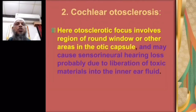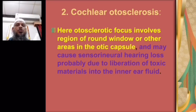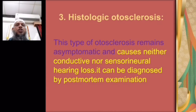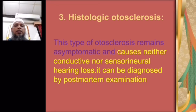Number two is cochlear otosclerosis, where the otosclerotic focus involves the region of the oval or round window or other areas in the otic capsule, and may cause sensorineural hearing loss, probably due to liberation of toxic material into the inner ear fluid. Number three is histologic otosclerosis — this type remains asymptomatic, causes neither conductive deafness nor sensorineural hearing loss, and can only be diagnosed by post-mortem examination.